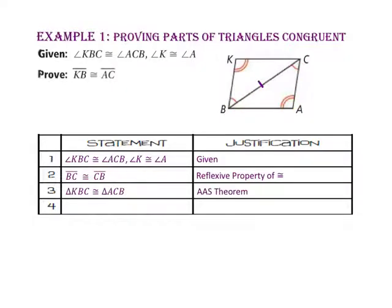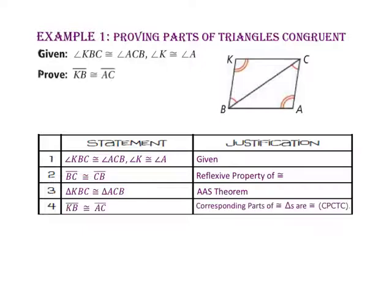Since these two triangles are congruent, we know that all of their corresponding parts are also congruent. Since we are trying to prove that side KB is congruent to side AC, we know that they are congruent by CPCTC — corresponding parts of congruent triangles are congruent.